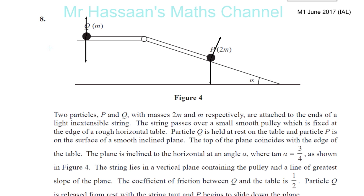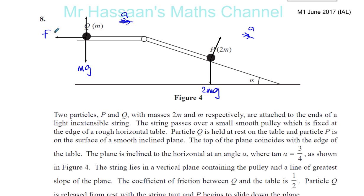We know the horizontal table is a rough horizontal table. As P is going to start moving, acceleration is going to be in that direction. It says that P is going to go down the slope, so friction is going to oppose the motion and act in the opposite direction. The mass of particle P is 2M, so the weight is 2MG. The mass of Q is M, so its weight is MG. This is the friction force, this is the reaction of Q, and this is the reaction of P - they're not going to be the same.